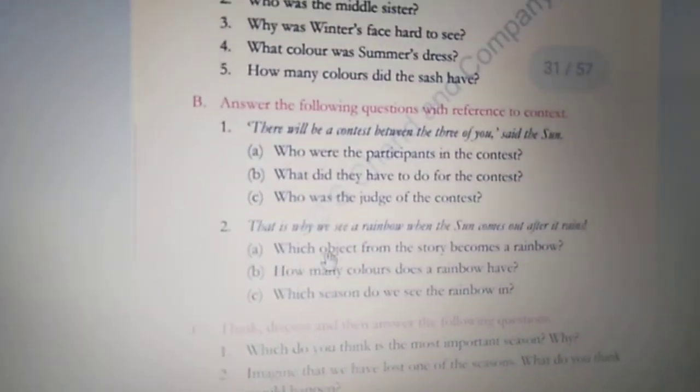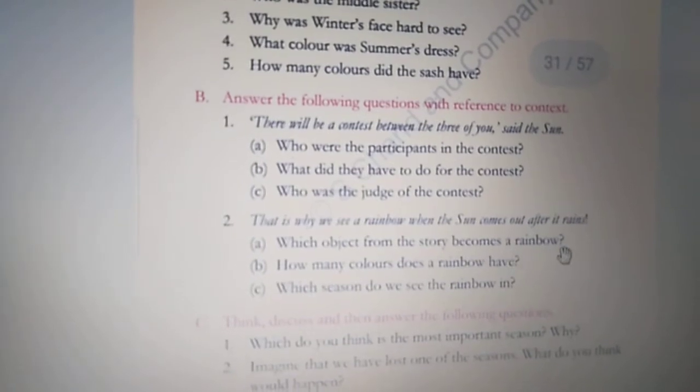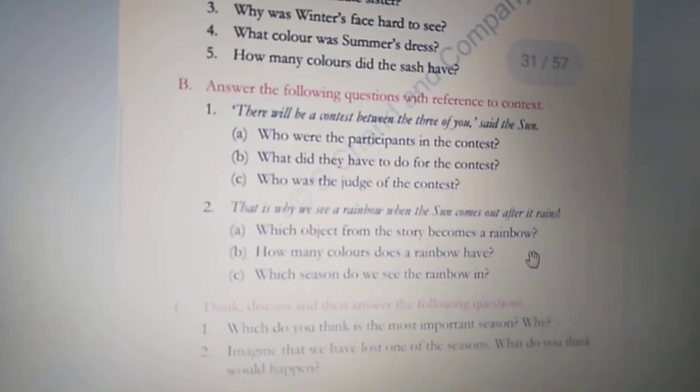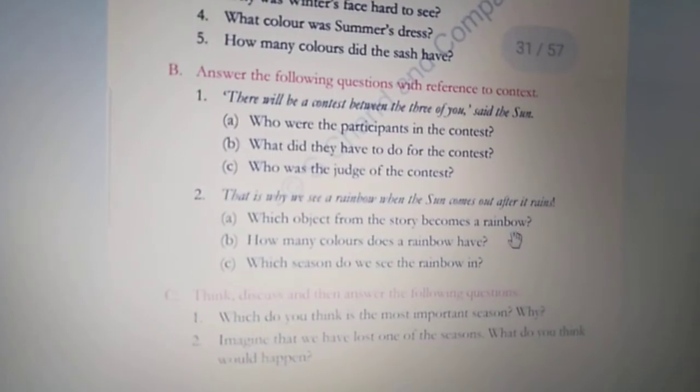Question they are asking is, which object from the story becomes a rainbow? Story may as a kaunsa object hai, joo baad mein rainbow ban gaya. The sash, which the sun, the sash given by sun to the monsoon. Woh wala sash joo, suraj nene monsoon ko diya tha contest win karne pe. Woh kya ban jata hai? Rainbow.